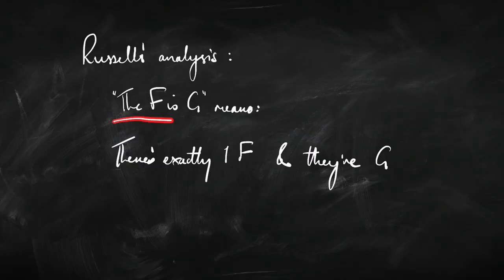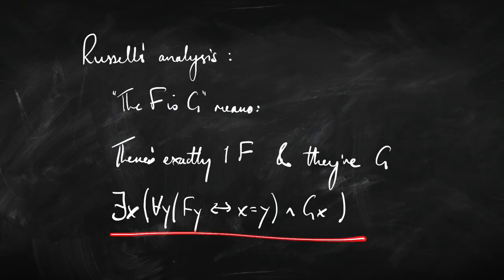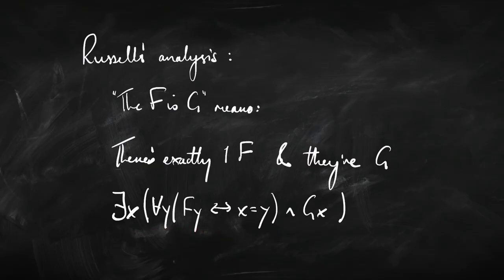Russell wasn't just raising a problem — he was solving it. According to Russell's analysis, a definite description 'the F is G' — something like 'the lecturer is tall' — means firstly there's exactly one F: there's exactly one lecturer, and they are G, they are tall. Using what we learned about identity in first-order logic, we can express it like this. This formula says both that there's at least one F and at most one F, so this X is the only F, and it's also saying that X is G. So there's a unique F and that person is G. The F might sound like a referring expression, like a name, but on Russell's analysis it's actually a sentence — 'there's exactly one F' — something that can simply be true or false.